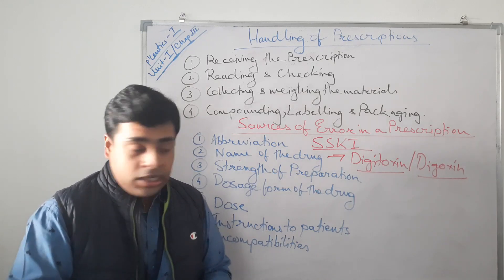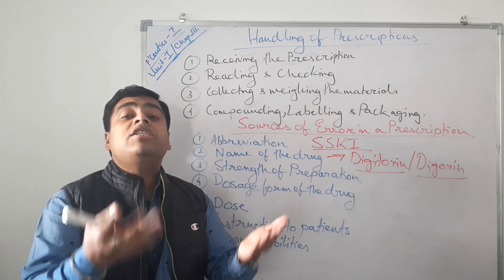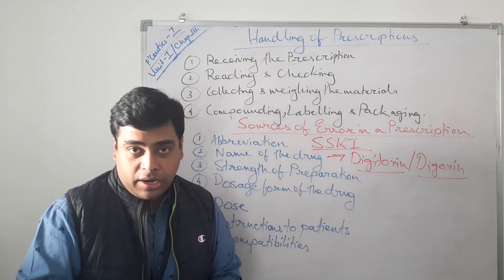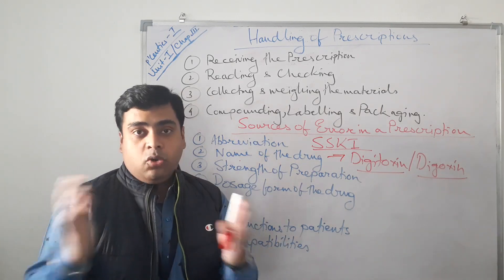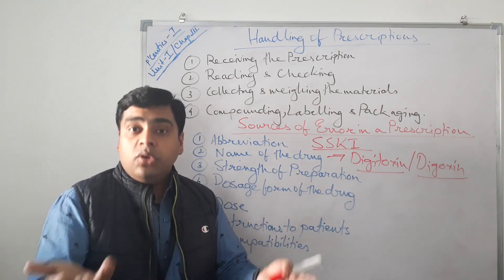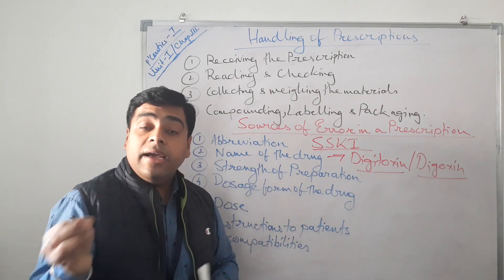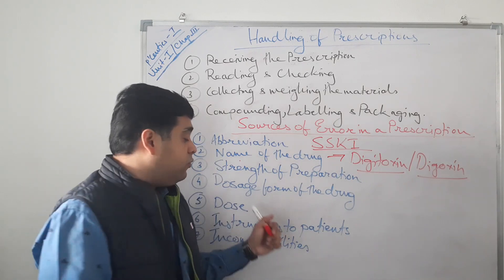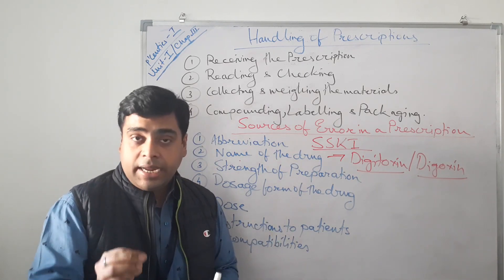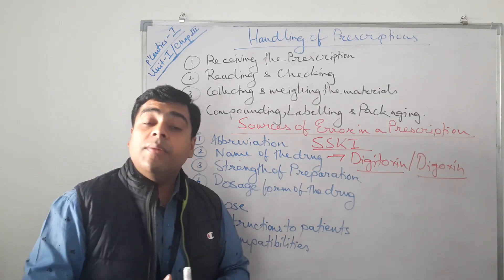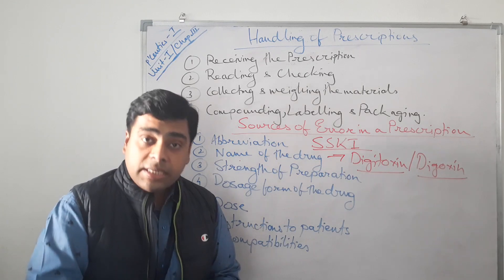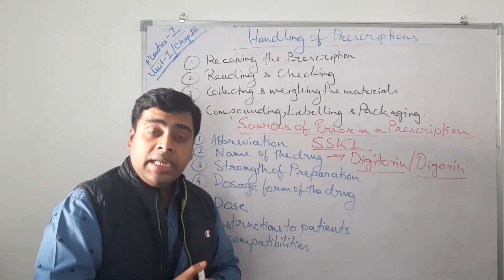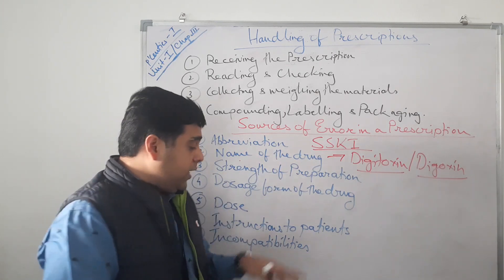Dose is the quantity of a particular medication. The dose varies based on a number of factors, and a single dose is not equal for two patients. The pharmacist must be very vigilant about what dose is prescribed to the patient, as incorrect dosing can lead to serious consequences.